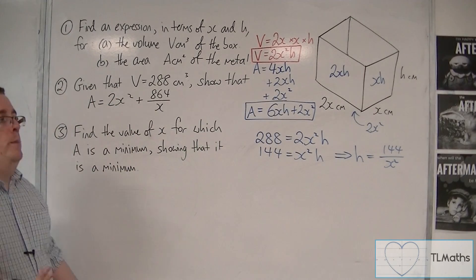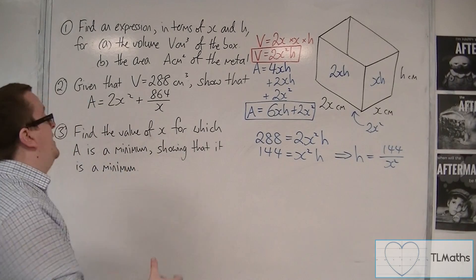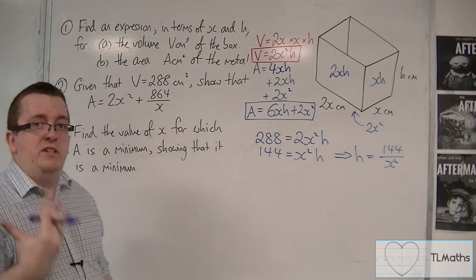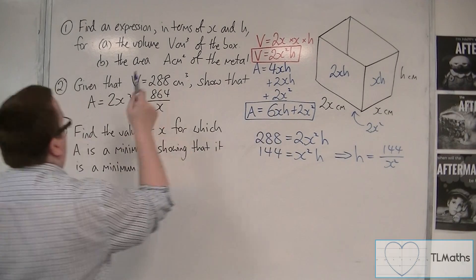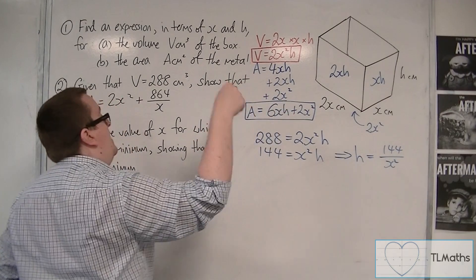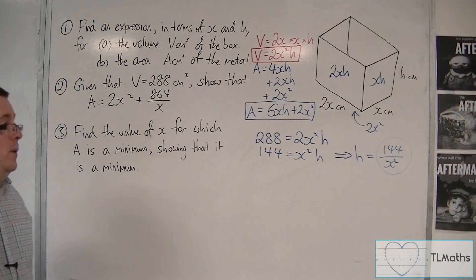Now, why would we do that? Why would we get h equals? Well, the reason is that I want to get to using this area equation, because that's what I've been told to use. And the thing that's stopping this look like that is because it has an h in it. But now I can replace the h with 144 over x squared.